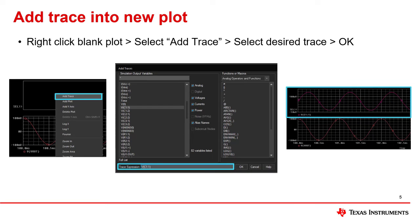To add a trace into a new plot without using probes on the circuit schematic, right-click the blank plot. Next, select Add Trace. Find the desired trace and then select OK.